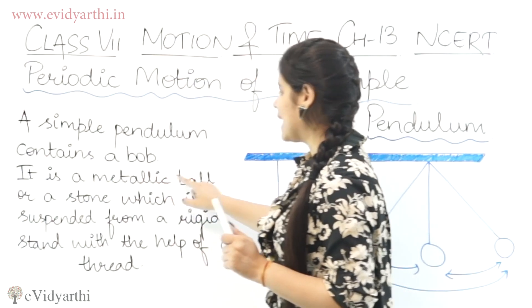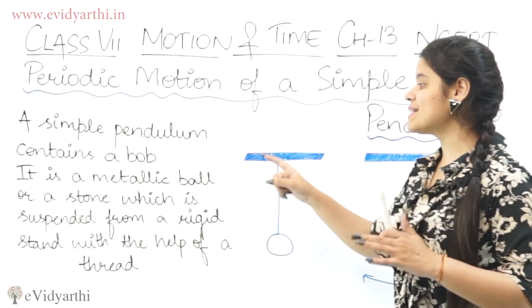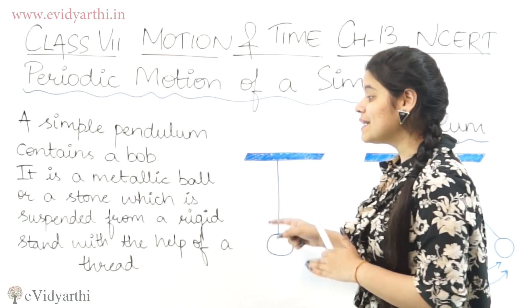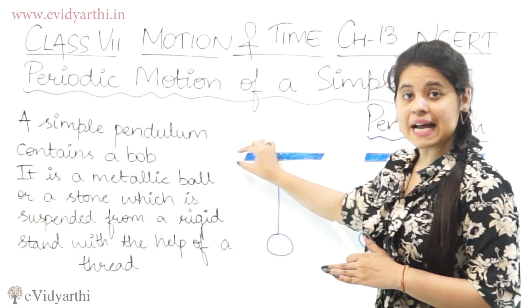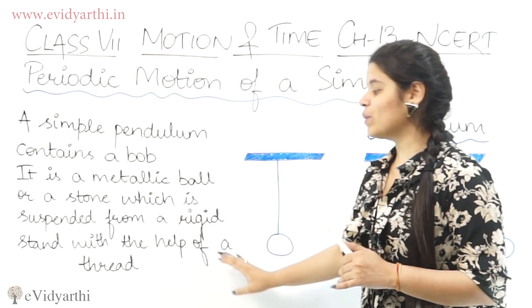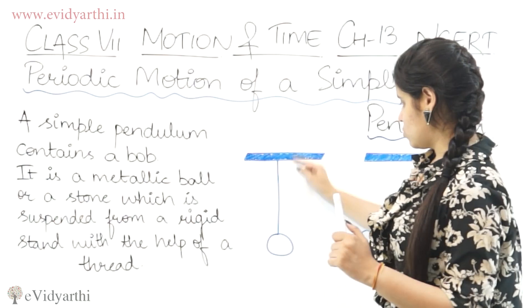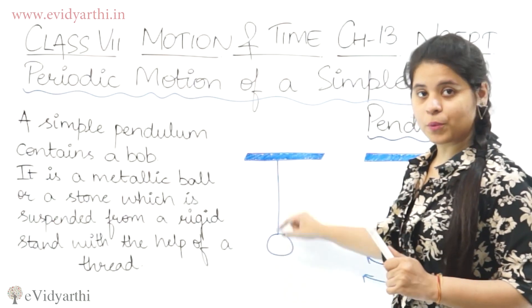It is a metallic ball or a stone which is suspended from a rigid stand. Rigid stand is with the help of a thread. So this thread will help the bob from the stand.